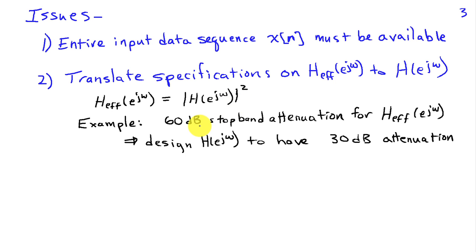For example, if you require that the overall system have a 60 dB attenuation in the stop band, in other words H_effective(e^jω) has a gain of -60 dB in the stop band, then that implies that we need to design the original filter, H(e^jω) that's used in those two steps, to have a 30 dB attenuation. Because when we implement the overall procedure, we use this filter twice, which is going to give us 60 dB attenuation.